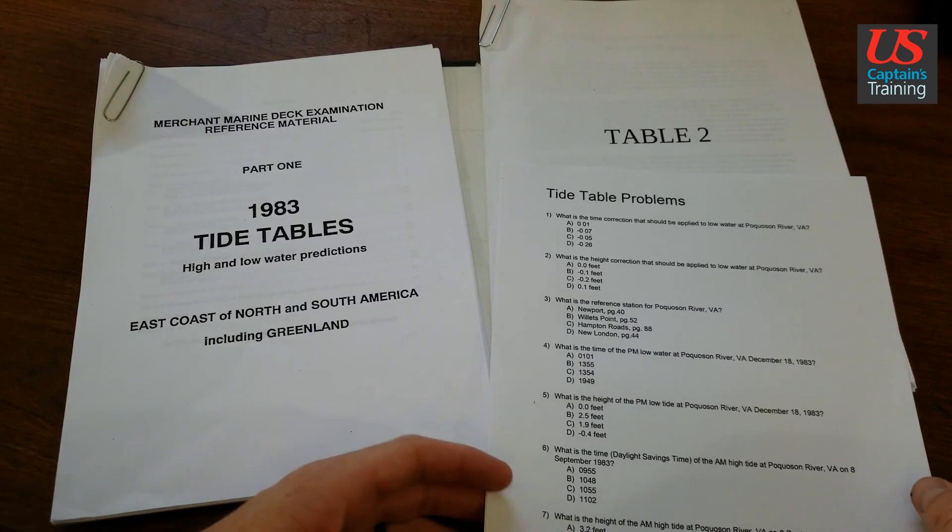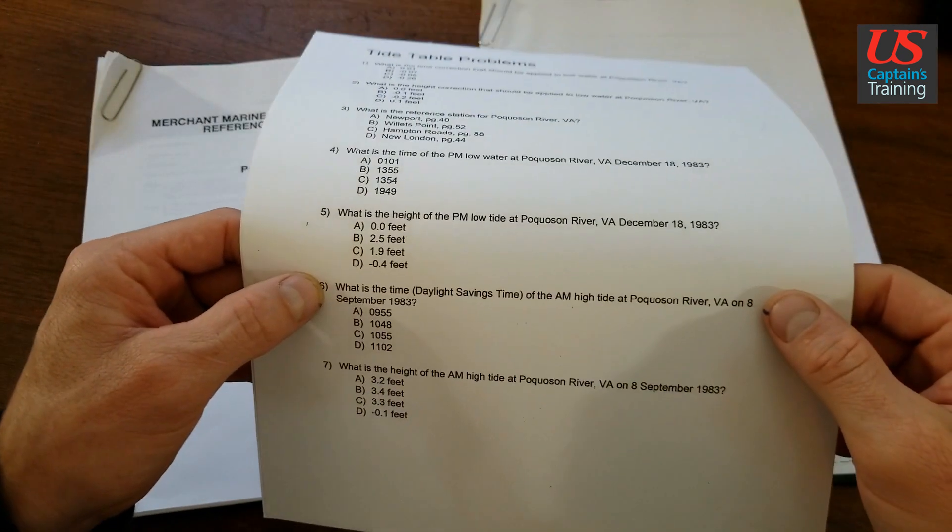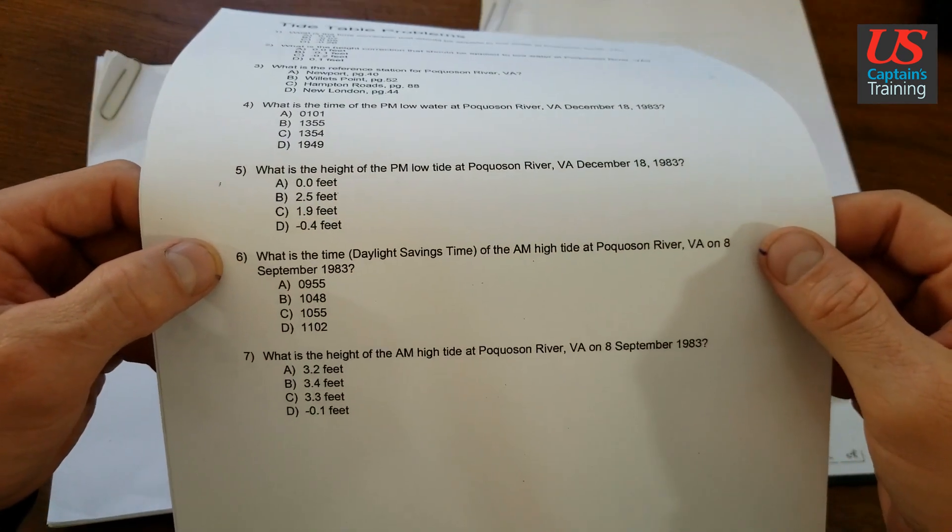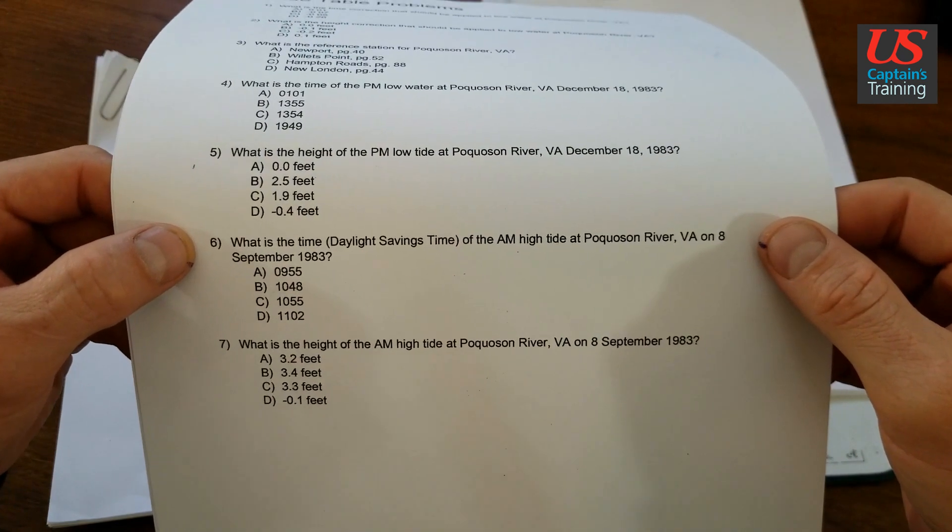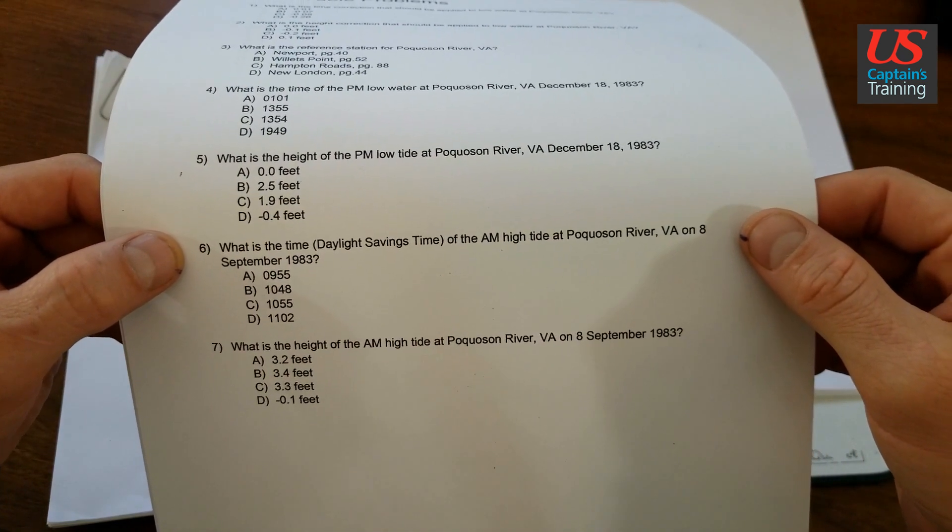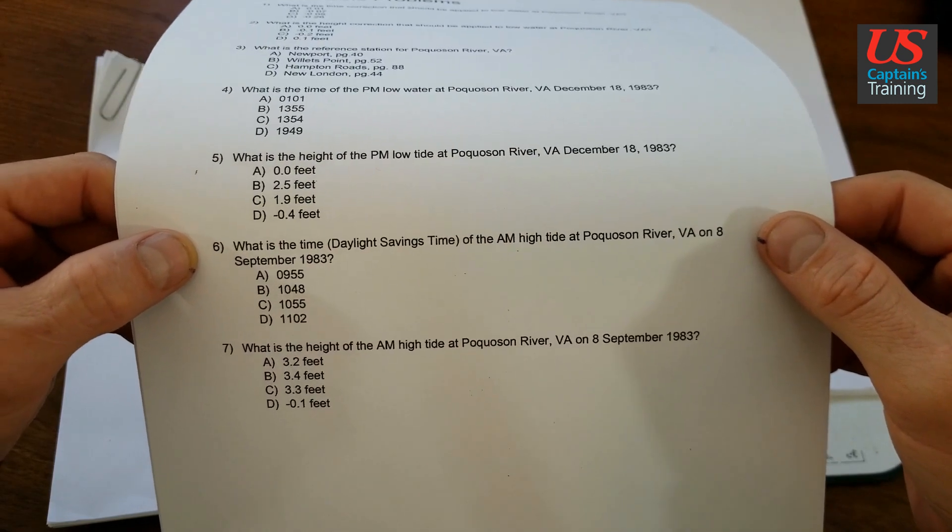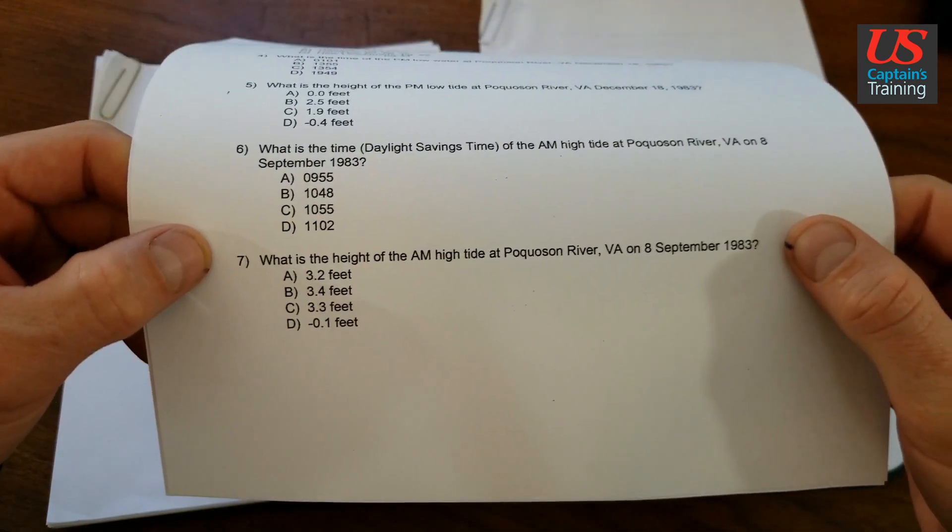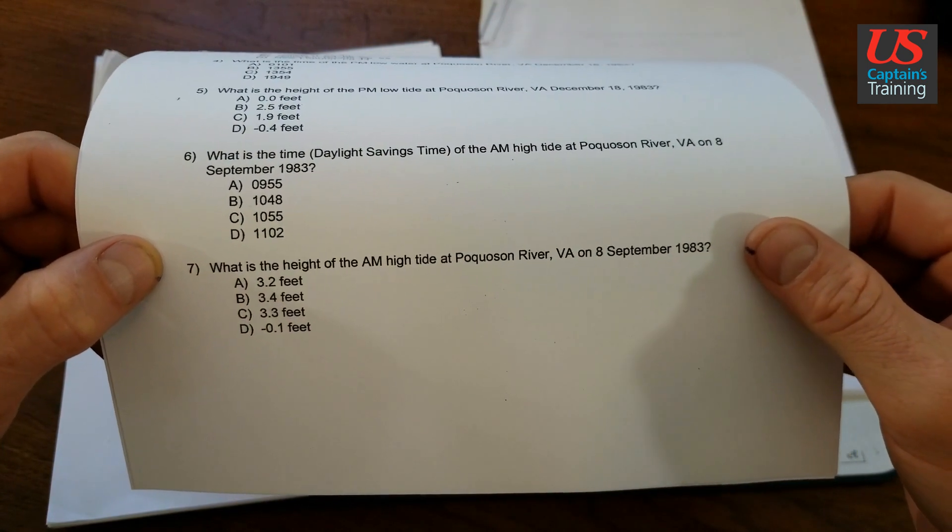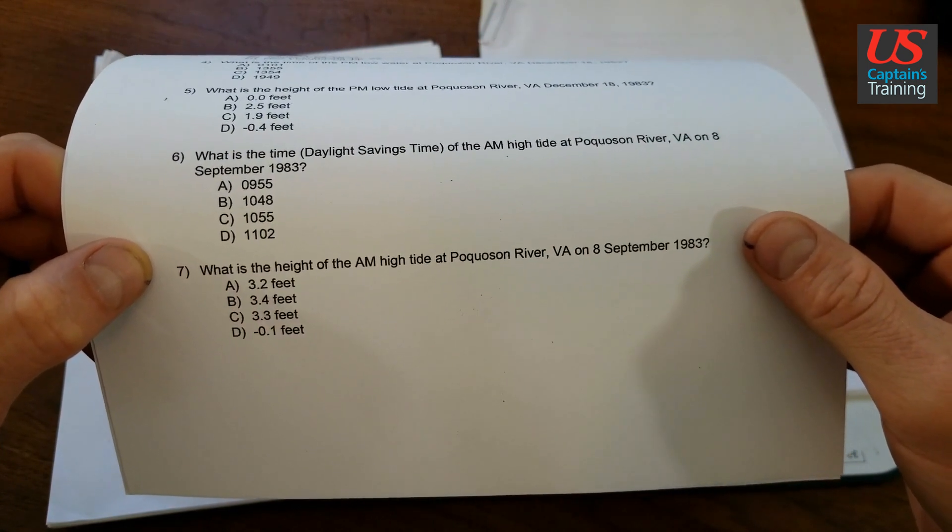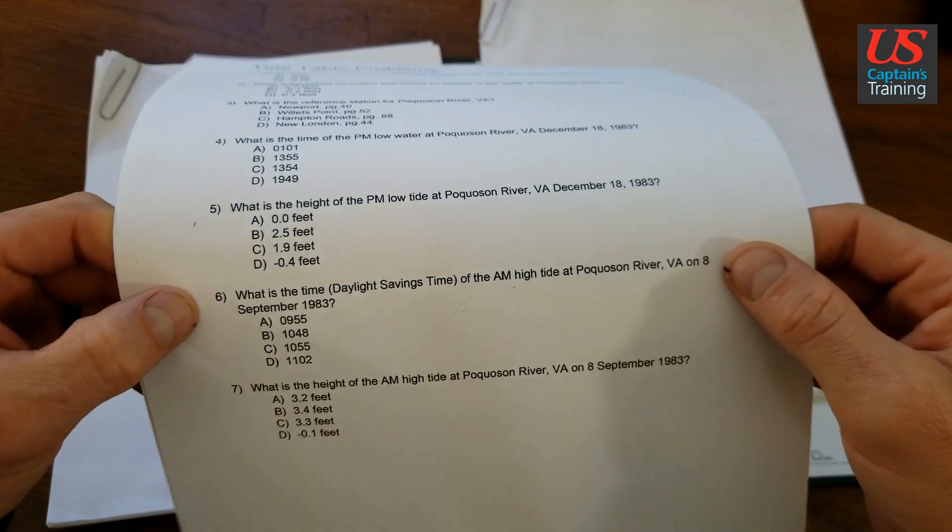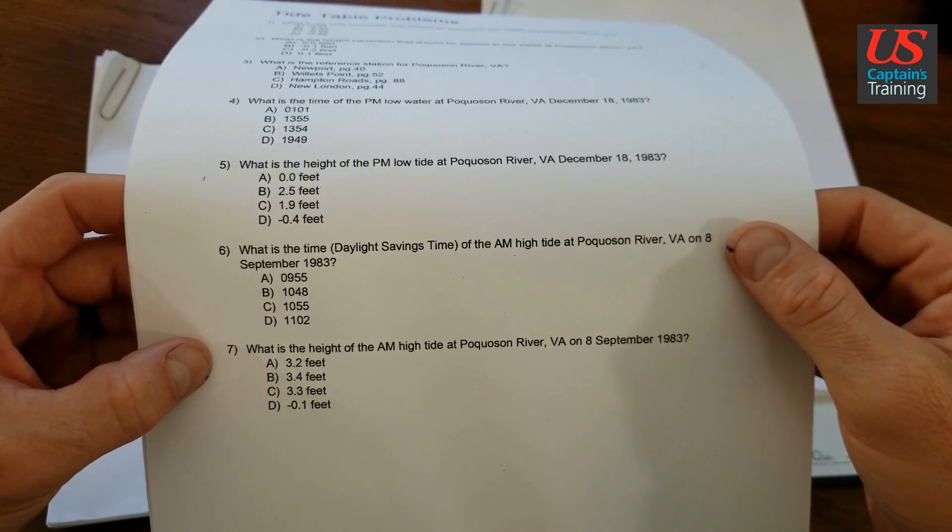Tide table practice problems 6 and 7. Problem 6 reads: What is the time, daylight savings time, of the AM high tide, Pocosin River VA, 8th of September? Problem 7 reads: What is the height of the AM high tide, Pocosin River VA, 8th of September? We're going to concentrate on 6, and number 7 will fall into place.